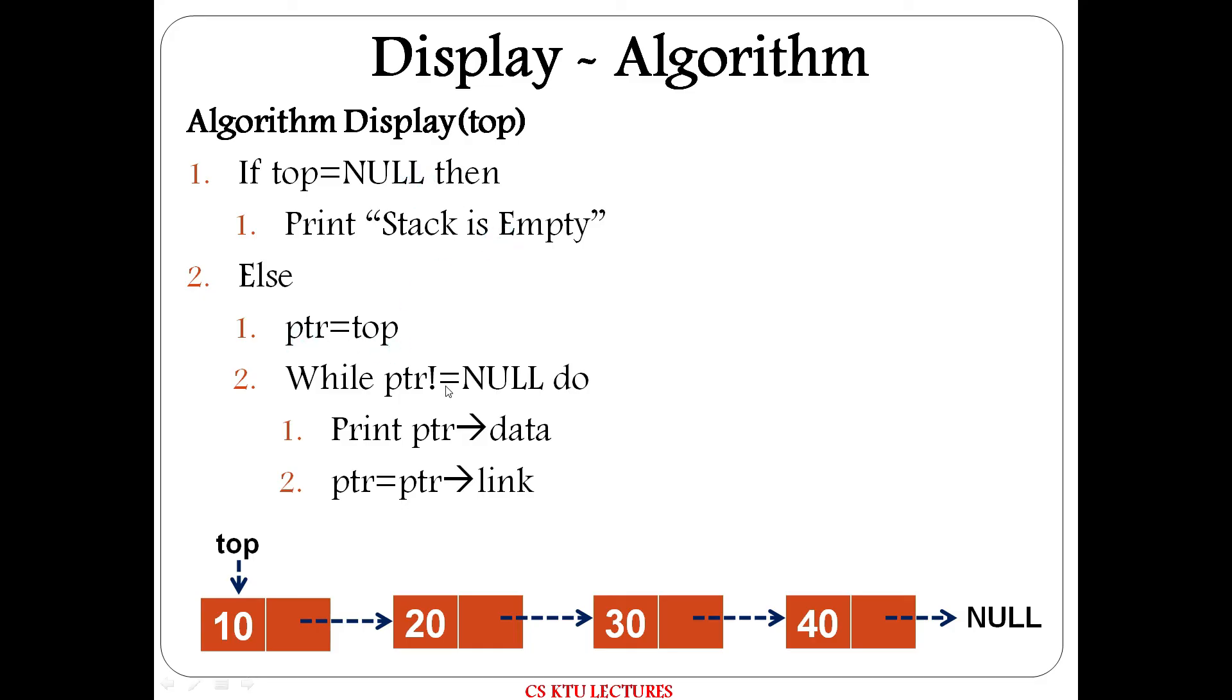Top will be ptr point. While ptr is not equal to null, if ptr is null it stops, if not null there is a node. Print ptr data. Next node will be updated. 10 displays, ptr is updated. Again check if ptr is null. Now next node is not null. That means 20 displays.